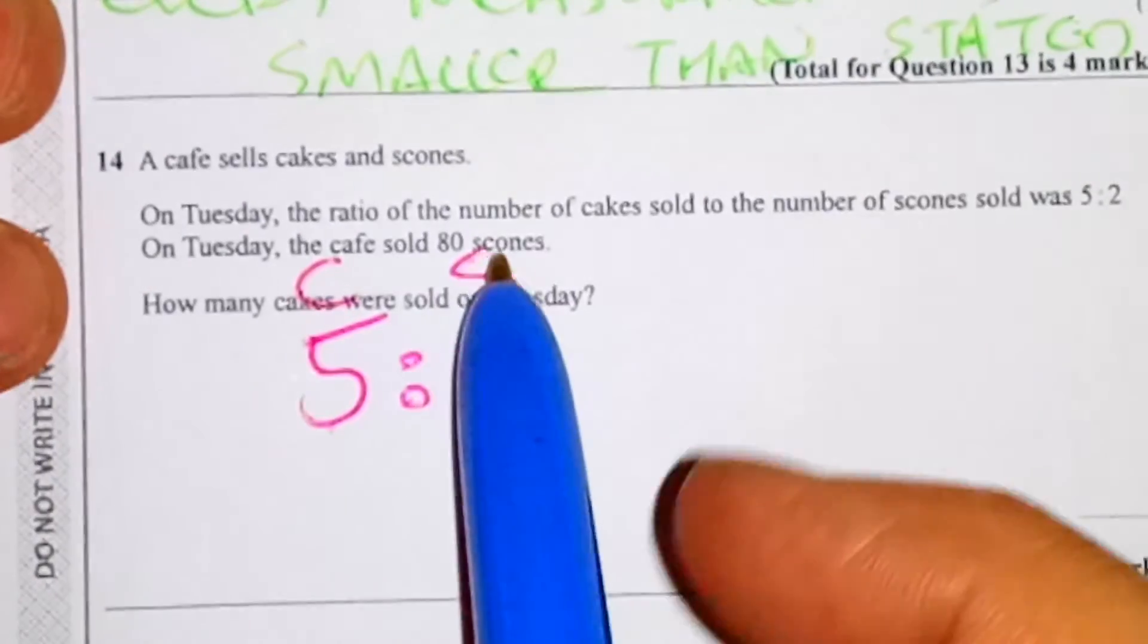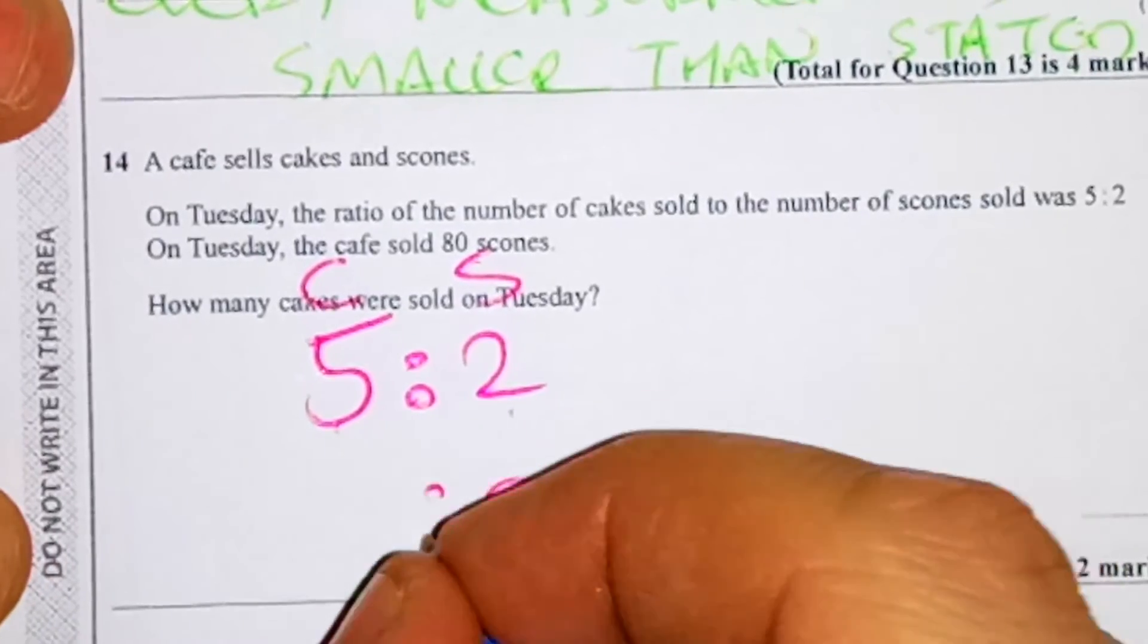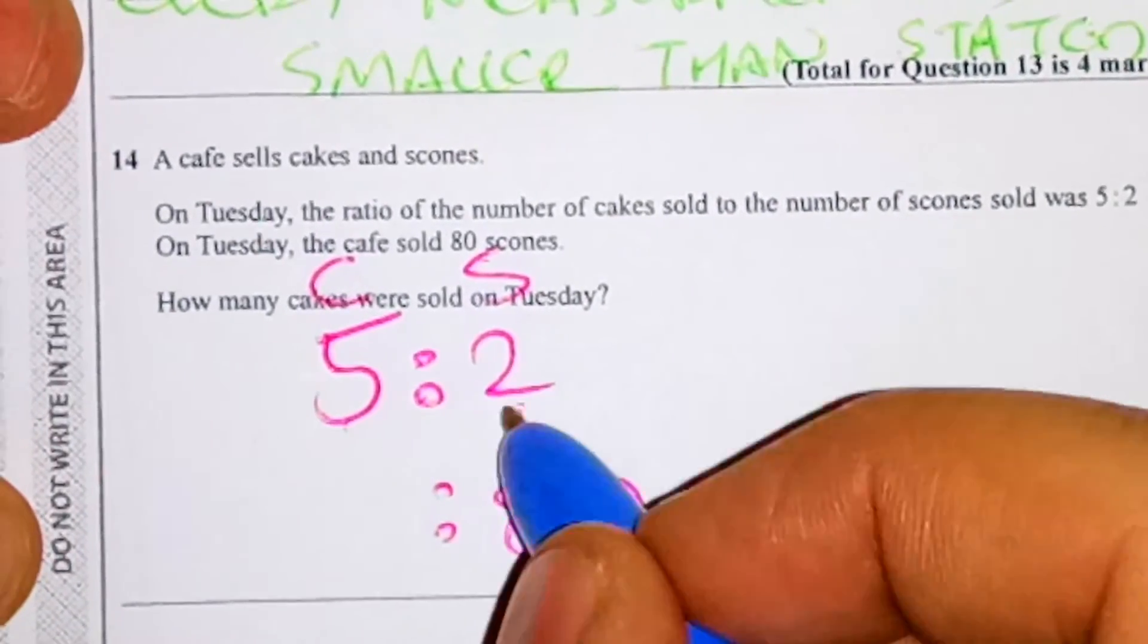On Tuesday the cafe sold 80 scones. So I need to put 80 here. Now we need to think about how do I get from 2 to 80?